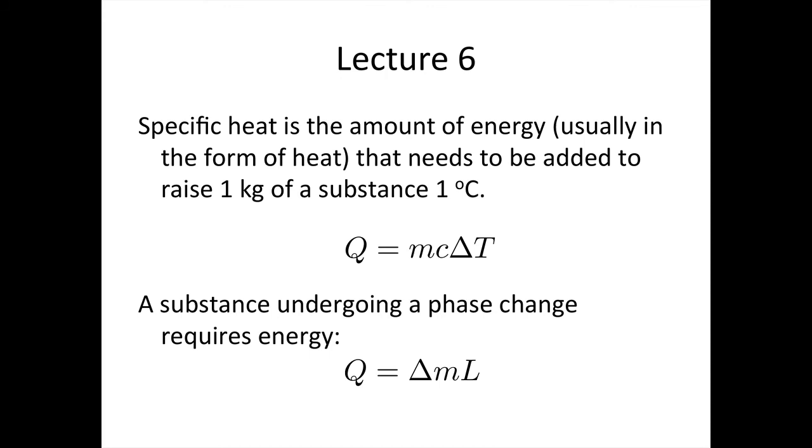In lecture 6, we were looking at specific and latent heat. We said that specific heat was the amount of energy, usually in the form of heat, that needs to be added to raise 1 kilogram of the substance 1 degree C. We can calculate the amount of heat that we need to add to change the temperature of a body using Q equals m c ΔT, where m is the mass of the body, c is the specific heat, and ΔT is the change in temperature.